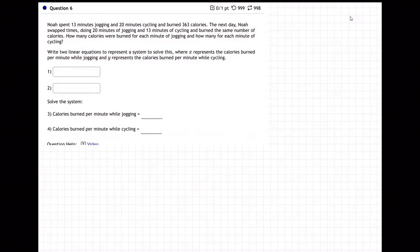Okay, so let's do it. Do you want me to let X be calories burned per minute jogging and Y to be cycling? Okay, so let's see.